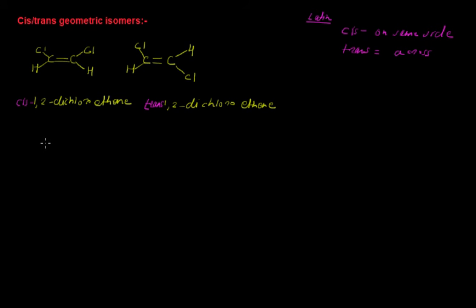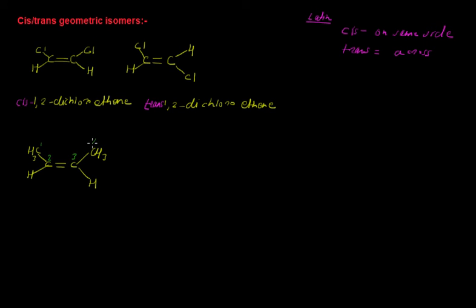Now let's look at more examples of cis-trans geometrical isomers. If you have a carbon-carbon double bond with a CH3 group and H on each carbon, if I ask for the IUPAC name, we number the carbons 1, 2, 3, and 4. The carbon-carbon double bond is at position 2, and the total number of carbon atoms is 4, so this compound is but-2-ene.